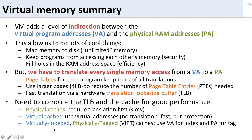We then saw the combination of virtually indexed, physically tagged — the VIPT cache. The VIPT cache uses the virtual address for the index and the physical address for the tag. This allows us to look up data in the cache using the virtual address at the same time as we run the TLB, and then at the end we use the physical address to ensure there are no security problems. However, this limits the size of our cache, because we can only use the bits that are the same between the virtual and physical address to index into the cache.